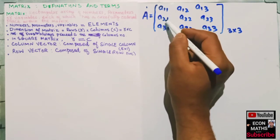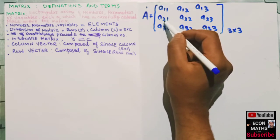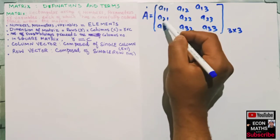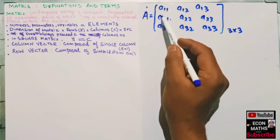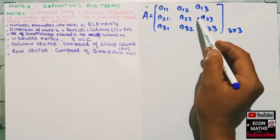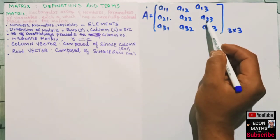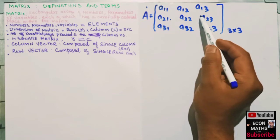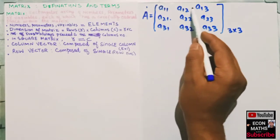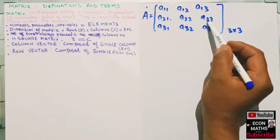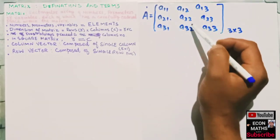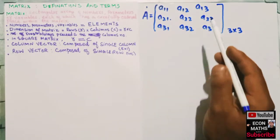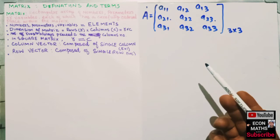For example, element a21 — the subscript two tells us this element is in the second row, and the subscript one tells us it is in the first column. Similarly, for element a23, the subscript two tells us it is in the second row, and the subscript three tells us it is in the third column. These subscripts give us the address or placement of any element in the matrix.